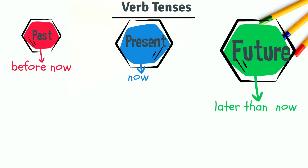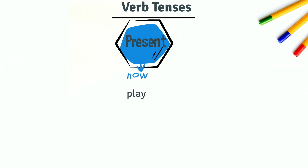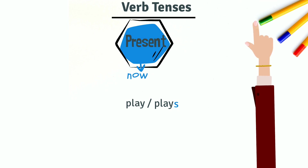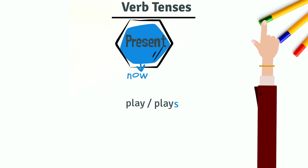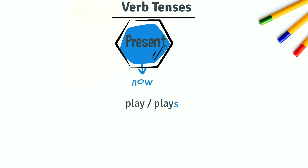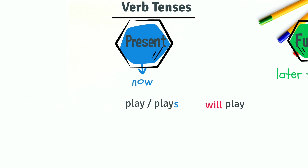The verb in the present remains the same. -S, -E, -S or -I, -E, -S are added to the verb if the subject is singular. Check this video to learn more about subject-verb agreement. The helping verb "will" is added to a verb to form the future tense.